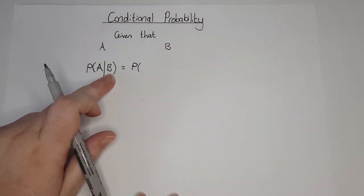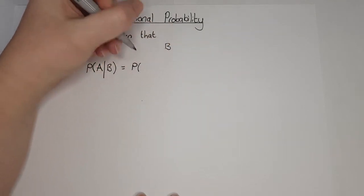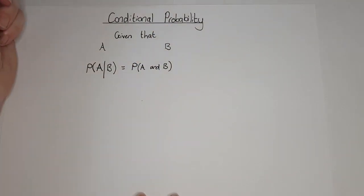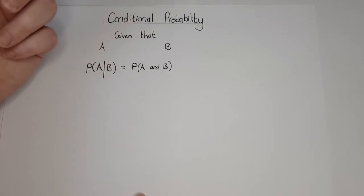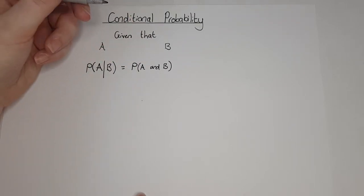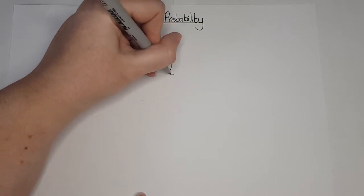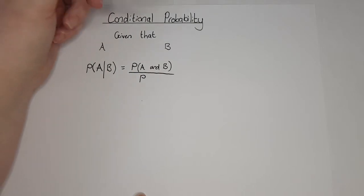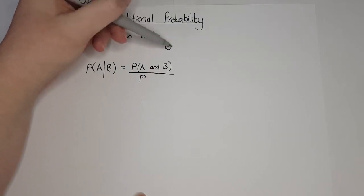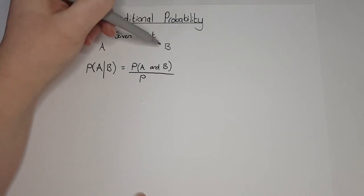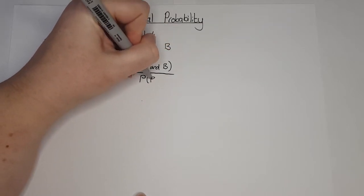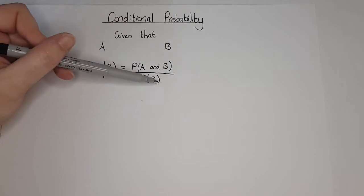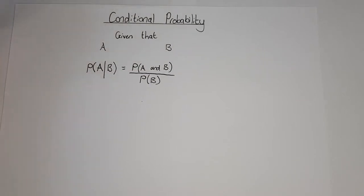So we have the probability of getting A and B together — so we can have A and B — and then we divide it by just the probability of the 'given that' thing. So we divide by the probability of just getting B. You always take both together, divided by just the one where we said 'given that'.